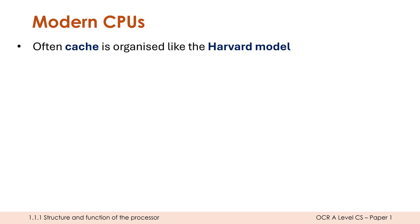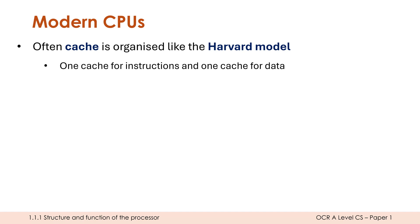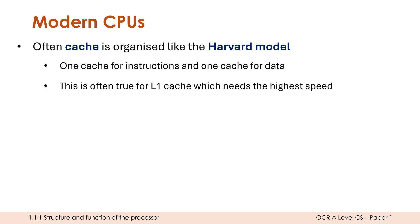Modern day CPUs have had to basically follow the von Neumann architecture because RAM contains both instructions and data, but within the CPU they are free to use Harvard if they want to. Often cache is organised more like the Harvard model, having one cache for instructions and one separate cache unit for data. This is almost always true for level one cache. Level two and level three cache may be more like von Neumann, but for level one cache — which needs the highest speed — we might have separate caches. It's more expensive and more complicated, but it means no bottlenecks accessing both simultaneously.